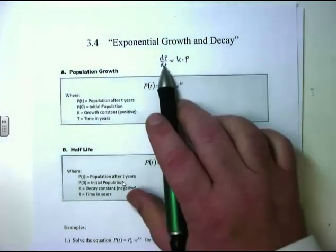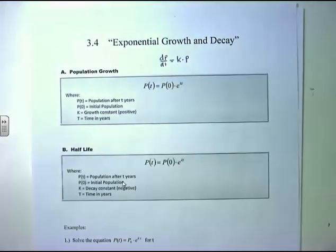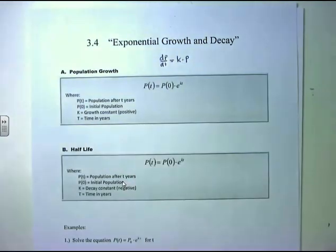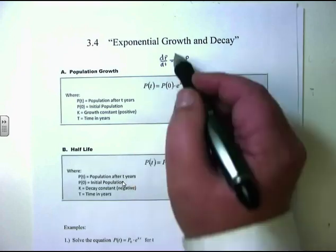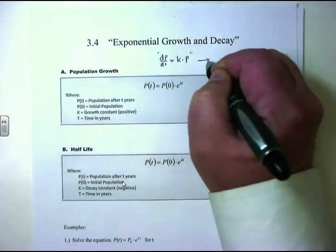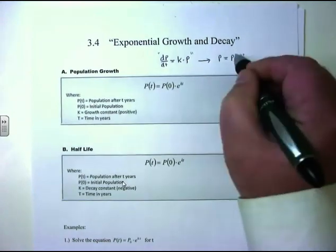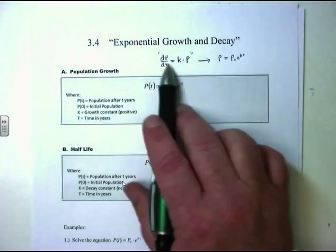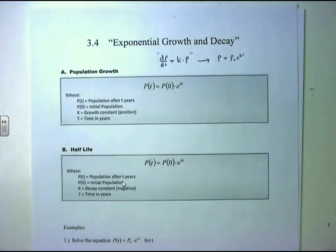At any given time, how fast the population is growing is dependent upon the population at that particular time. So dP/dt equals K times P. When you have this style of differential equation — an equation that has a derivative in it — the solution is P naught times E to the KT. This is the solution to that differential equation. We have a whole class on differential equations, so we're not going to get that deep into the concept here.